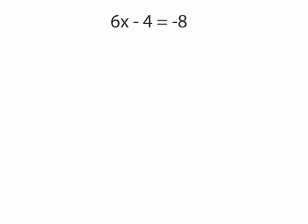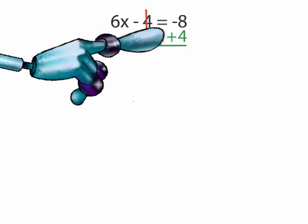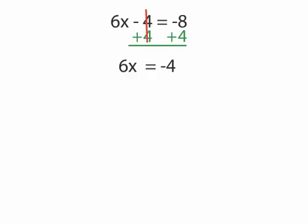In the third equation, we have 6x minus 4 equals negative 8. Again, we want to isolate the x on one side, so let's get rid of the negative 4 by adding 4 to both sides. The two 4s cancel out. On the other side, negative 8 plus 4 equals negative 4. We are left with 6x equals negative 4.